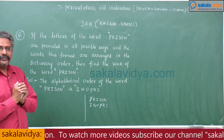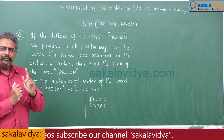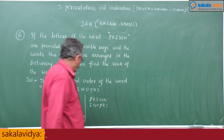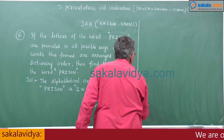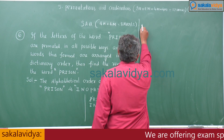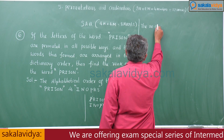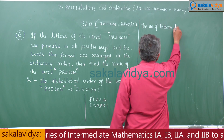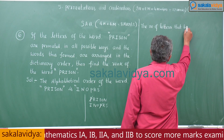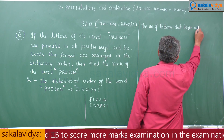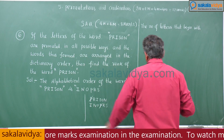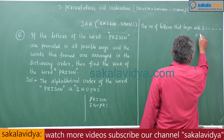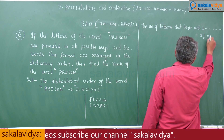First, write the number of words that begin with I. After I there are 5 remaining places, so these 5 places can be filled in 5 factorial ways, which is equal to 120.